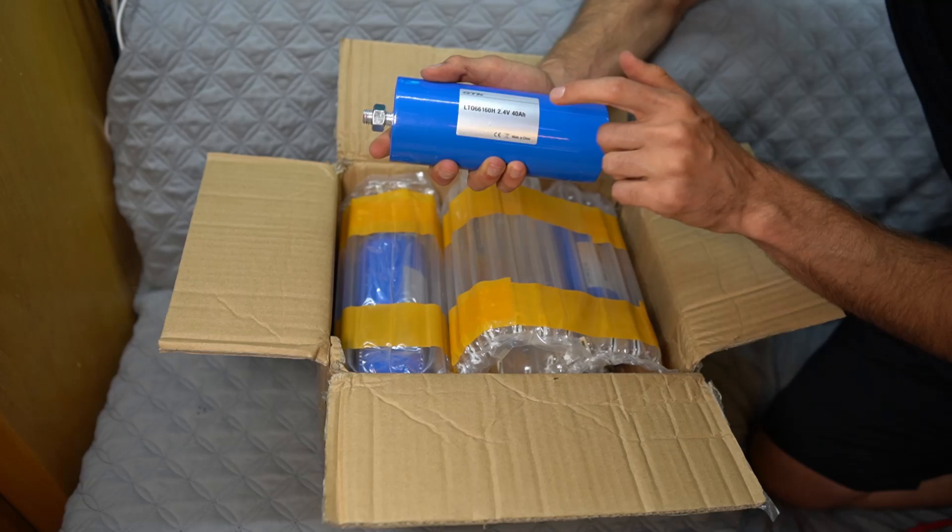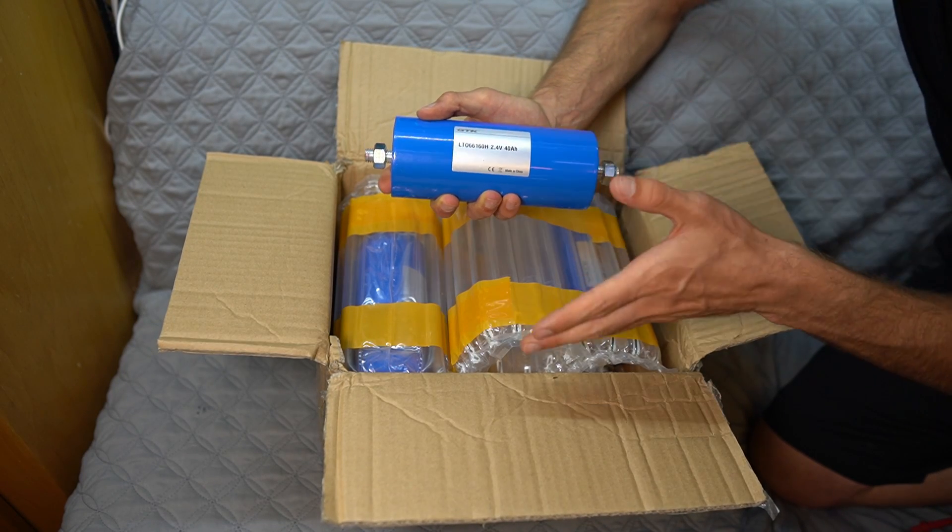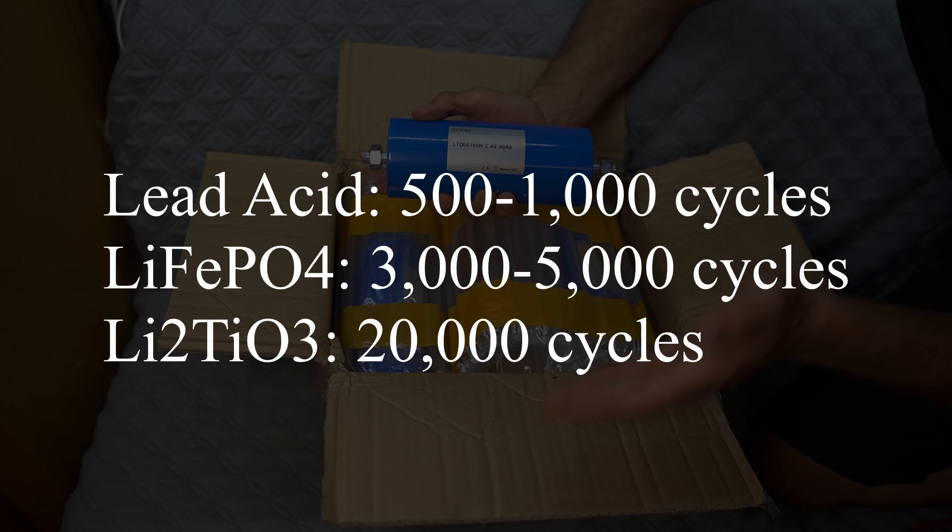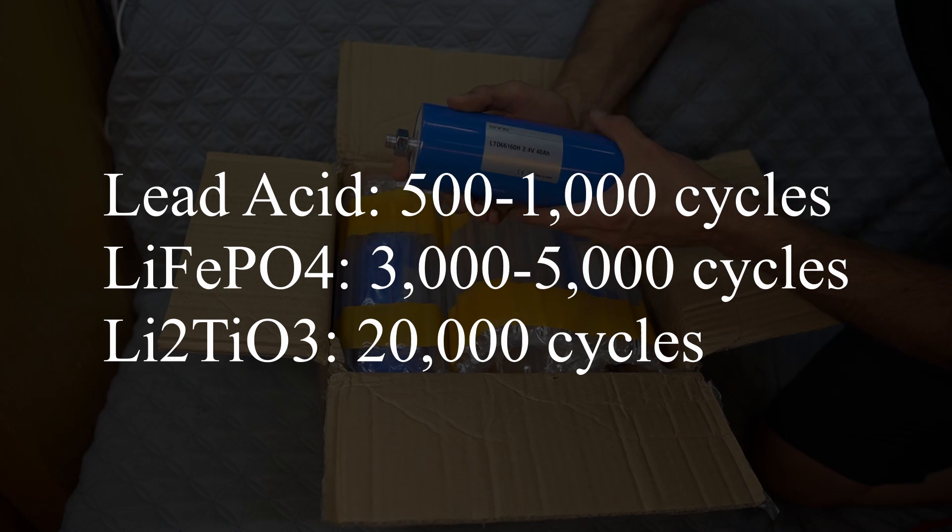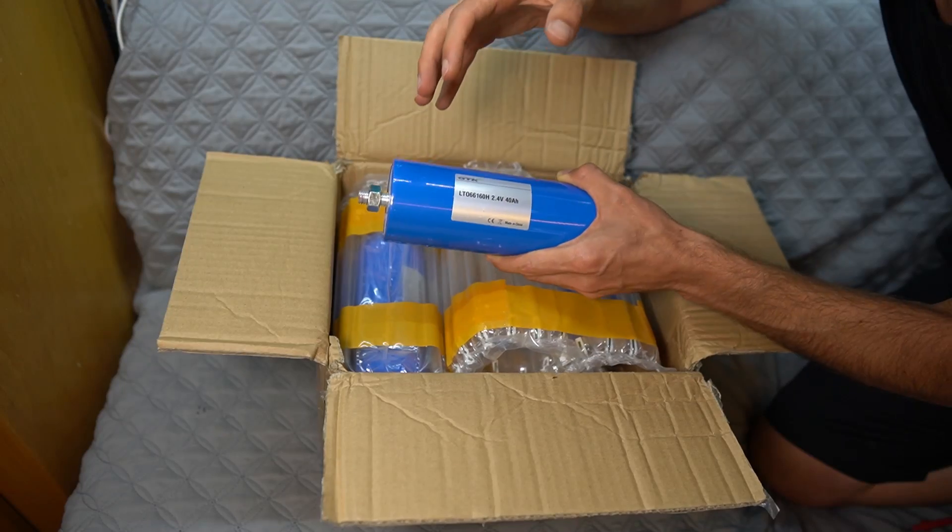The charge cycle life of these is 20,000 charge cycles. A lead acid is like 500 to 1,000, lithium iron phosphate is like 3,000 to 5,000, but these do 20,000 charge cycles. It's going to be insane. This will last longer than I will be alive on this earth.